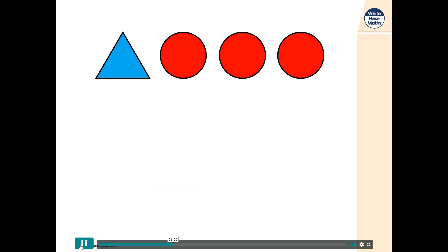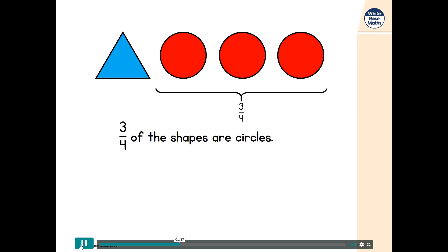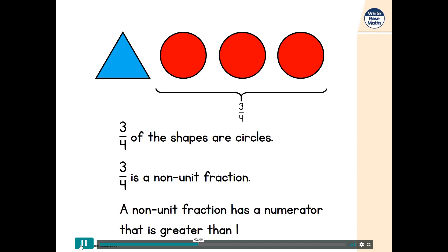Now let's look at the circles again. Three quarters of the shapes are circles. The numerator of three quarters is three. The denominator of three quarters is four. We call three quarters a non-unit fraction. That's because its numerator is not equal to one — it's greater than one. A non-unit fraction always has a numerator that is greater than one.